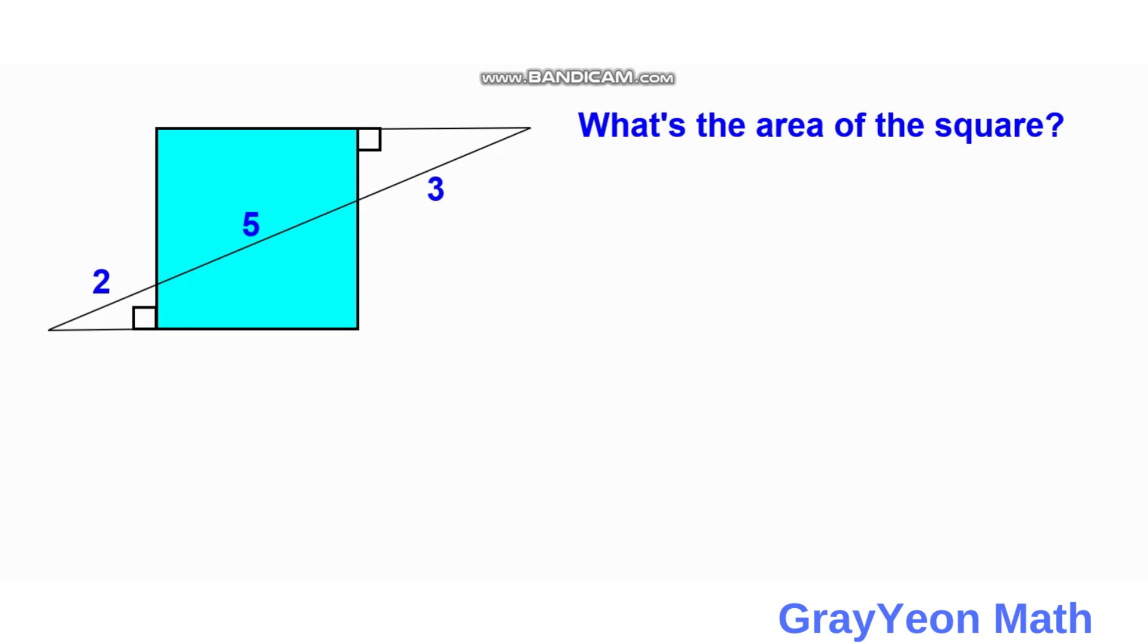We have a square, and inside the square, a line of length 5 is extended outwards with dimensions of 2 and 3 respectively as shown, forming a right triangle on each side. We are required to find the area of the blue square.